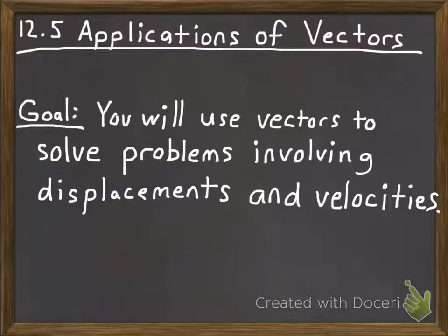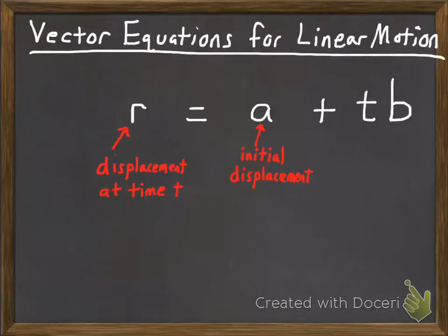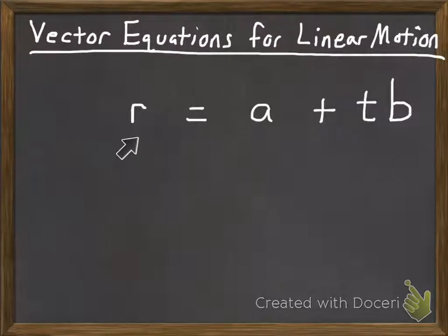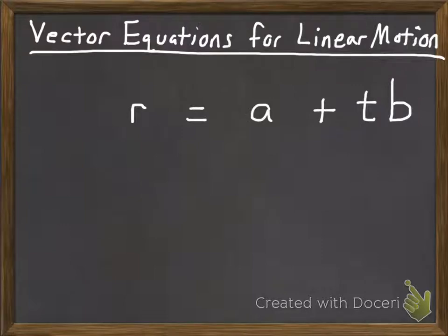In this video, we'll work through an IB problem involving position, displacement, and velocities. The basic equation we'll use is the vector form of a linear equation: r = a + t·b, where a point's position equals its initial position plus some parameter times its direction vector.